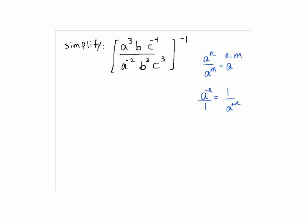So over here, I get A to the power of—I have to subtract the exponents. So it would be 3 minus minus 2, B to the power of—the exponent here is 1, so it would be 1 minus 2, and C to the power of minus 4 minus 3. The whole thing should be to the power of negative 1.